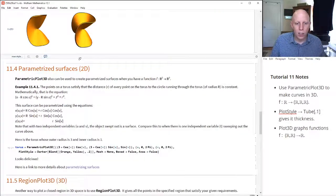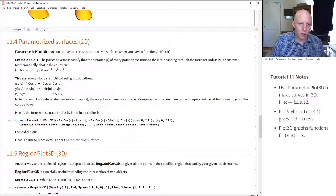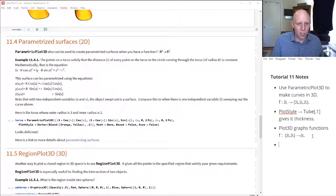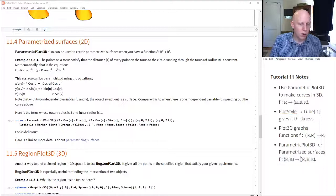All right, so now let's talk about a type of surface that is less thought of when you're dealing with higher width in three dimensions. And that's the idea of a parametrized surface. Now, a parametrized surface is one where we have a function from R² to R³.